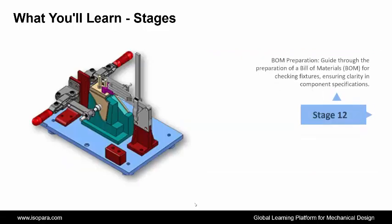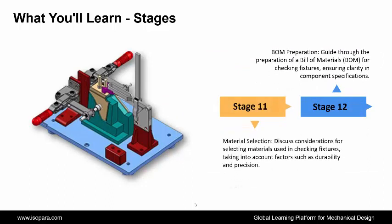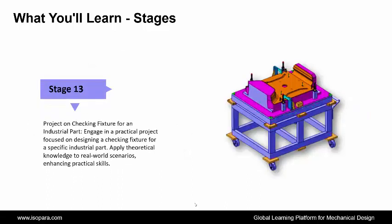Next is Material Selection — discussing considerations for selecting materials used in checking fixtures, taking into account factors such as durability and precision. Next is BOM Preparation — guiding through the preparation of a bill of materials for checking fixtures, ensuring clarity in component specifications. And the last is a Project on Checking Fixture for an Industrial Part — engaging in a practical project focused on designing a checking fixture for a specific industrial part, applying theoretical knowledge to real-world scenarios and enhancing practical skills.